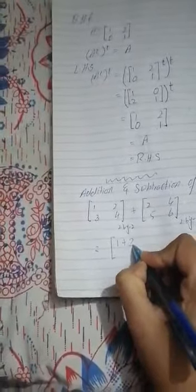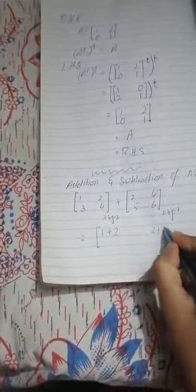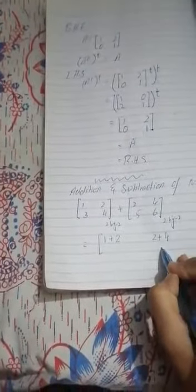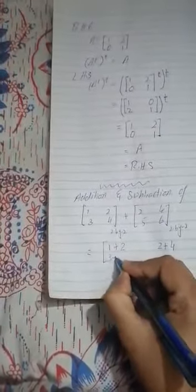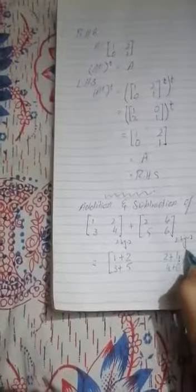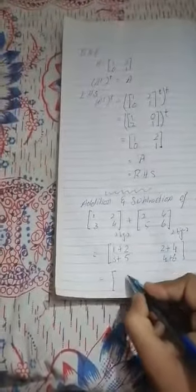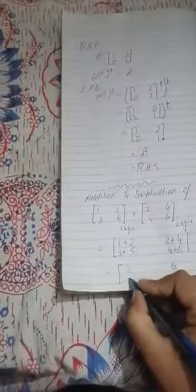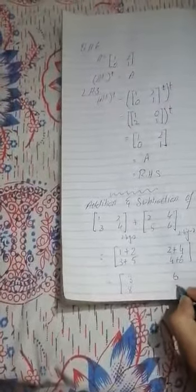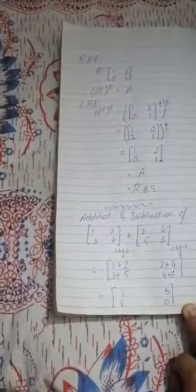How do we add them? We add the first entry with the first — one plus two — the second entry with the second — two plus four — and write it in the second place, the third entry with the third, and the fourth entry with the fourth. Two plus one is three, four plus two is six, eight, and ten. This is the addition.